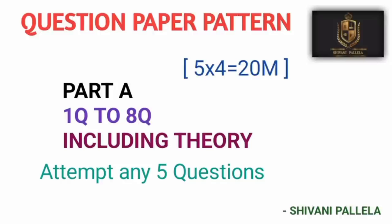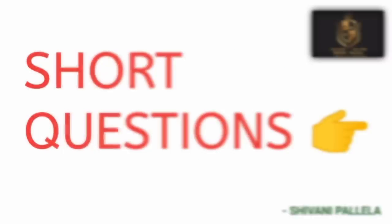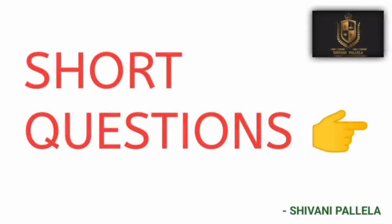Most of the time you will attempt problems only, but if attempting theory, four marks requires one page and long answers require two to three pages. Each question in Part B will have an internal choice including theory and problems. Question nine comes from unit one, ten from unit two, eleven from unit three, twelve from unit four, and thirteen from unit five.